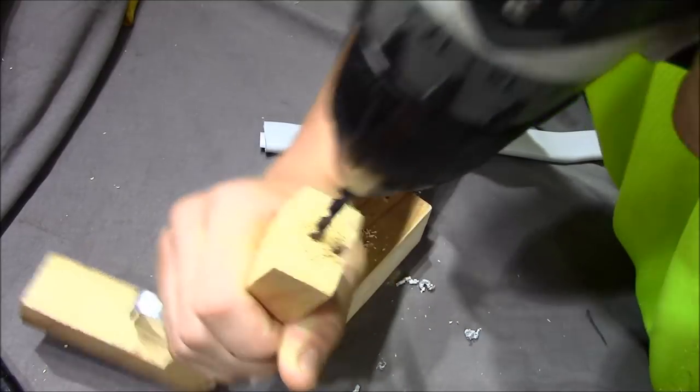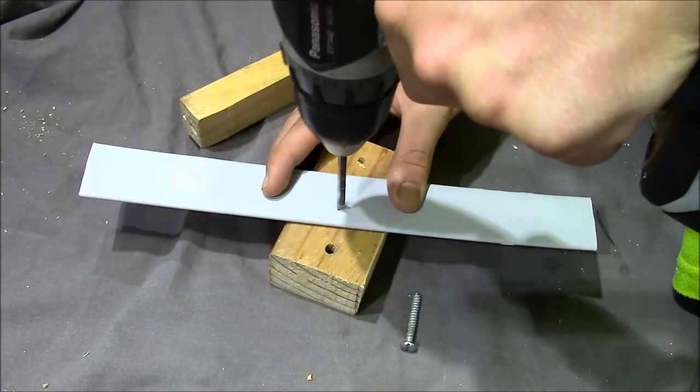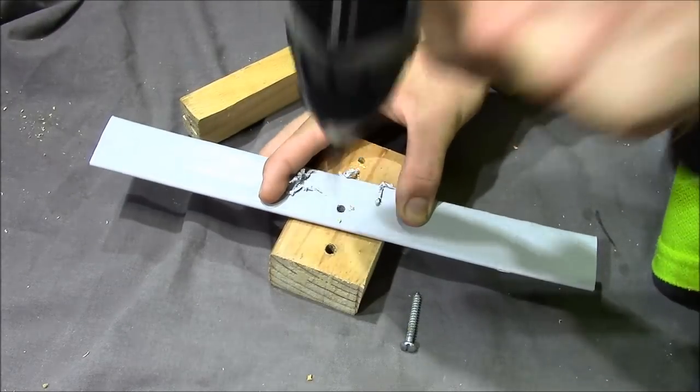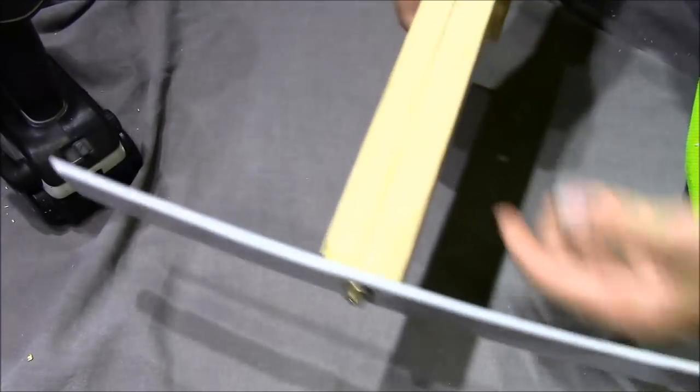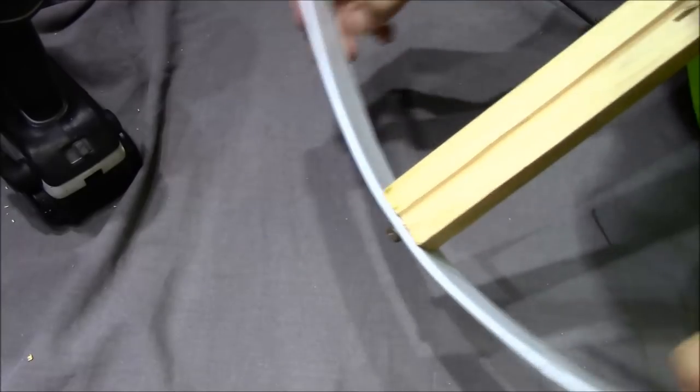Next just drill a hole in the front of your crossbow. Now you're just going to need to find the center of your limbs and drill a hole all the way through. I've just now put a bolt through the center of the limbs and into the crossbow.